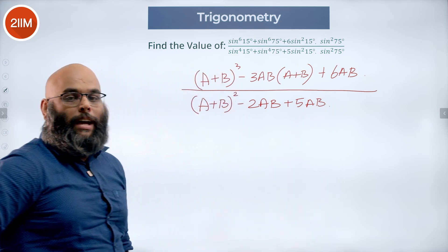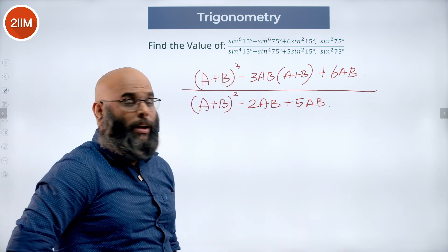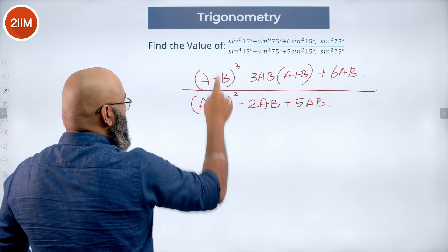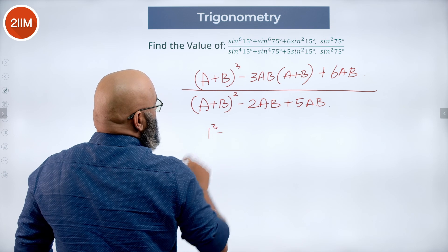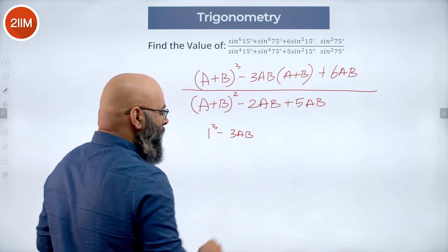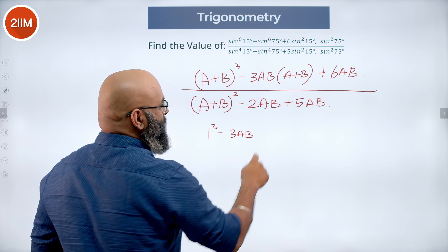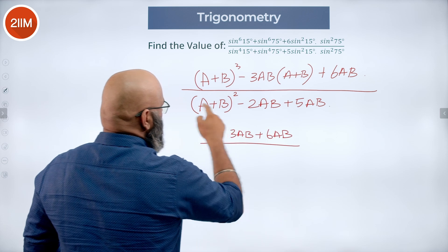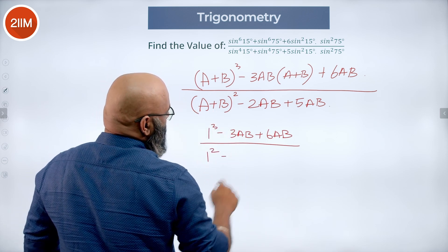Now we know a is sin square and b is cos square so sin square plus cos square is always 1. So this we can write it as 1 cube minus 3ab, again a plus b again gives me 1. So 3ab into 1 is 1 plus 6ab divided by this is 1 square minus 3ab.